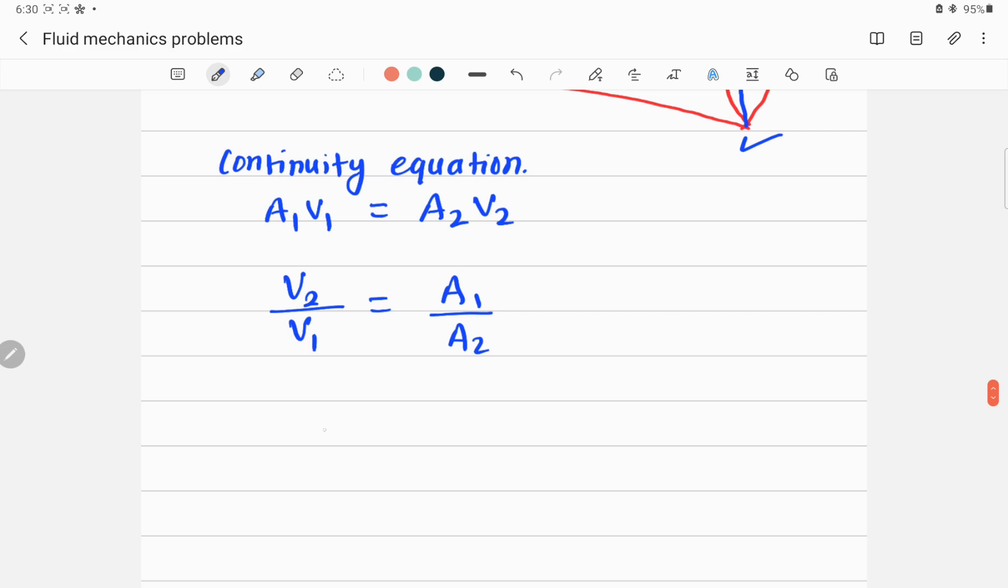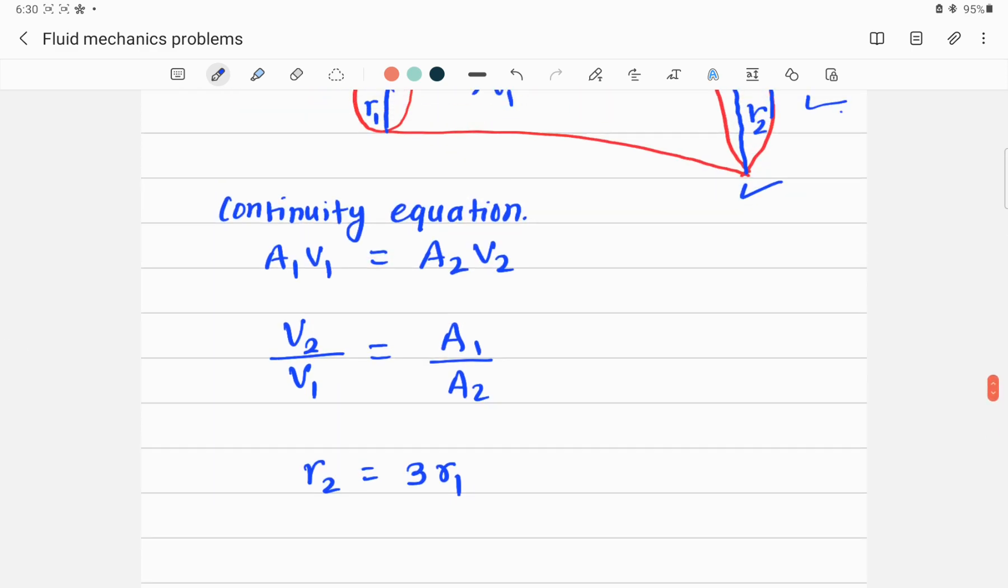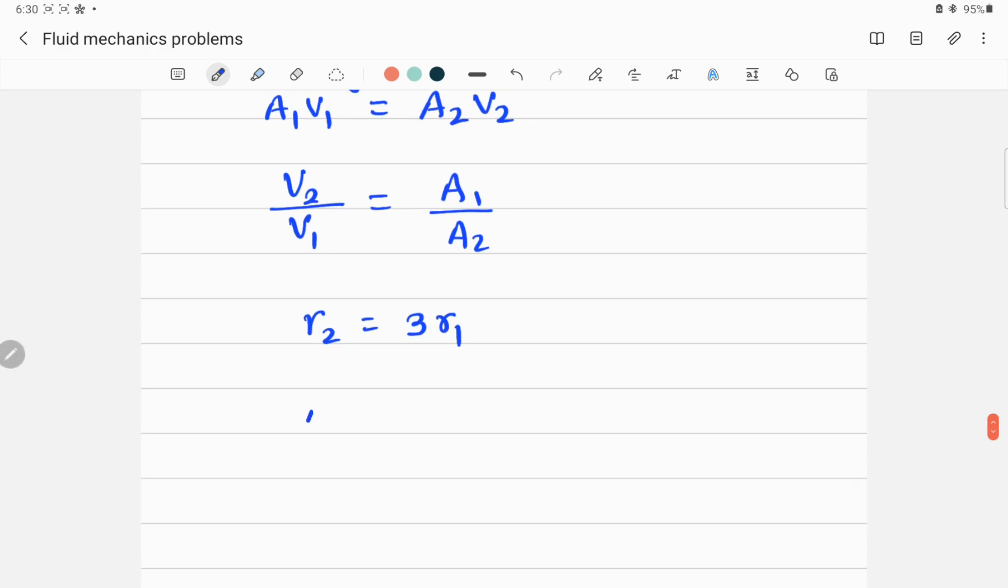As given in the equation, r2 is 3 times r1. How can you find the cross-sectional area? The cross-sectional area of the pipe is denoted by A and given by πr². So A1 will be equal to πr1², and A2 will be equal to πr2².